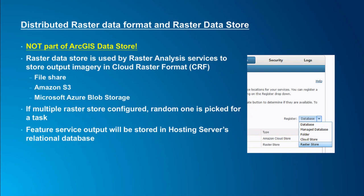In the Server Manager page you'll see the new store type under the datastore section. You can configure more than one raster store for Image Server; if multiple are configured, the service will randomly pick one per job. Some raster analysis tasks also output feature data, which is why you need a hosting server — all feature outputs are stored in the relational database configured with the hosting server, and feature services are published on the hosting server rather than the image server.